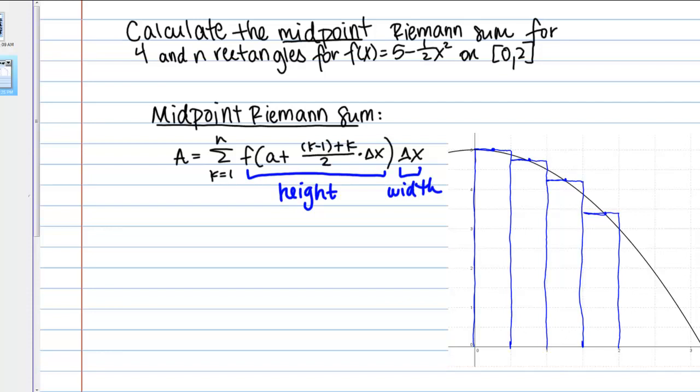Let's do an example of calculating midpoint Riemann sums. Here are the directions. Calculate the midpoint Riemann sum for 4 and n rectangles for f(x) equals 5 minus 1/2 x squared on the interval from 0 to 2.